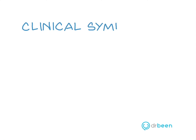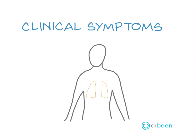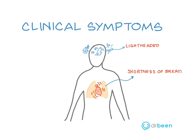Clinical symptoms. Because the ventricles are beating so rapidly, they don't have time to fill all the way. This can cause symptoms like lightheadedness because there's decreased oxygen flow to the brain, shortness of breath due to less oxygen perfusion in the lungs, and chest pain because the heart isn't getting enough blood.